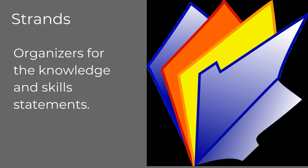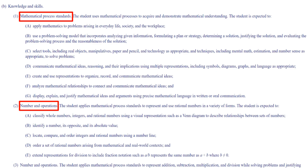The next part of the TEKS are the strands, which organize the knowledge and skill statements into overarching categories. In our sixth-grade mathematics TEKS, the phrases next to the numbers are considered the strands. You can see that the first two strands are Mathematics Process Standards and Number and Operations. At this time, you may want to pause the video to identify how your standards are organized. Putting a box around the strands will help you identify this part of the TEKS.